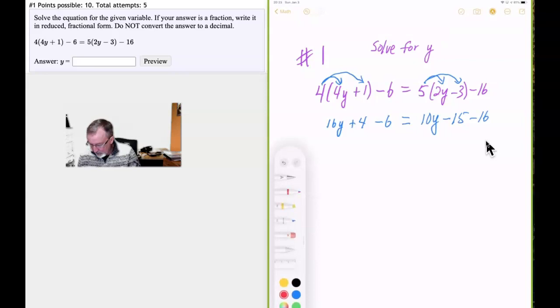So now that we've expanded it, we're going to simplify what we've got left. So 16y on this side stands by itself. But we have a positive 4 and a negative 6. So 4 minus 6 is negative 2.